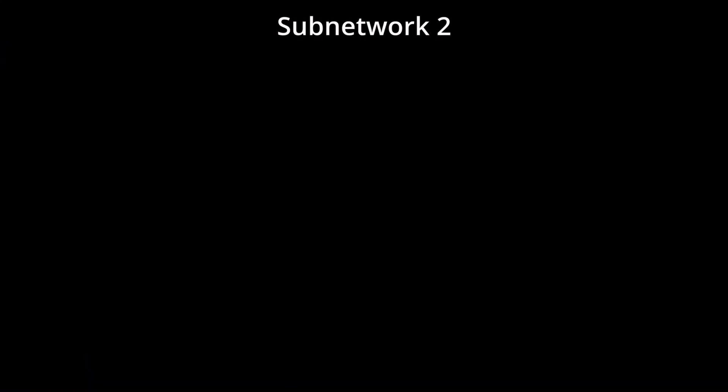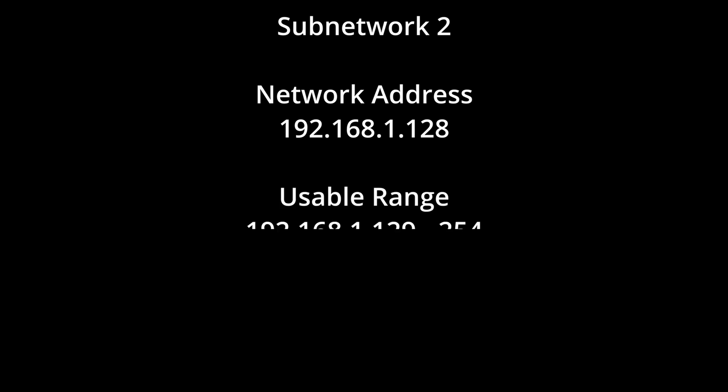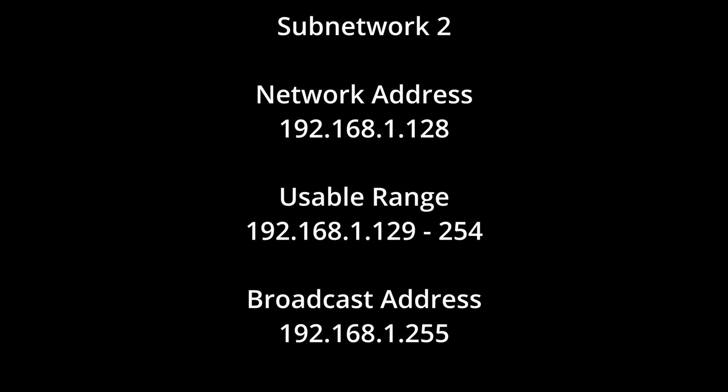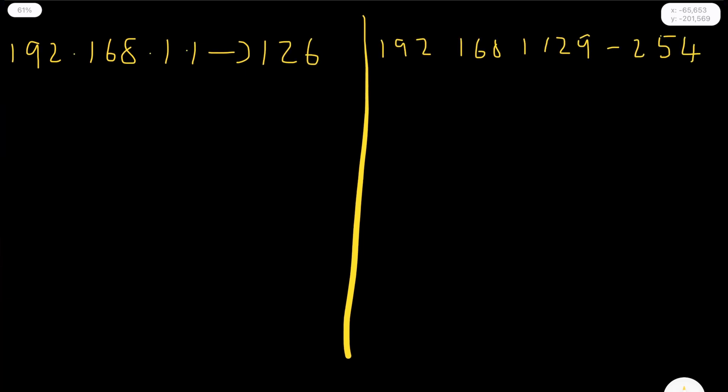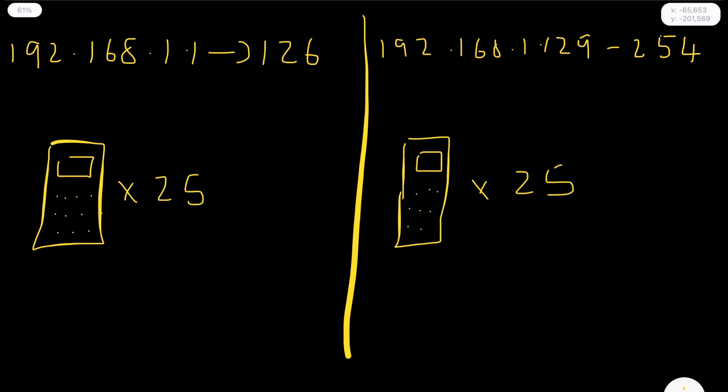Subnetwork two carries on from where subnetwork one ended. The network address is 192.168.1.128, the usable host range is 192.168.1.129 to 192.168.1.254, and the broadcast address is 192.168.1.255. However, if you had two networks with only 25 hosts per network, this is a bit wasteful of available addresses and resources.